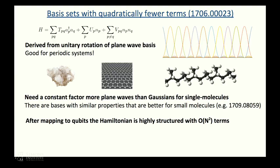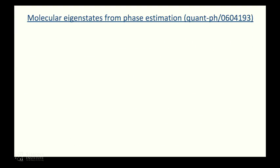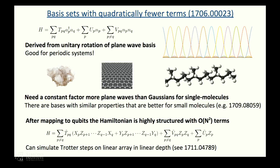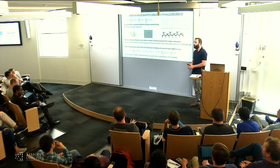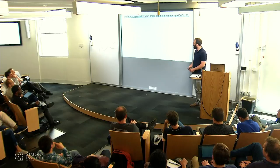But with Hamiltonian like this, after you map it to qubits, it's very structured. It has n squared terms, but there's also a lot of structure in it. For instance, we had this recent PRL showing that you could simulate time steps of this Hamiltonian in linear depth, even on a linearly connected array. The n is the number of basis functions, or equivalently the number of qubits, because we have one qubit for each spin orbital in this case.